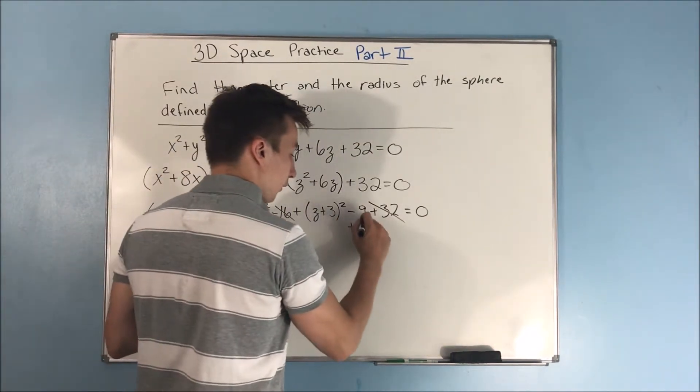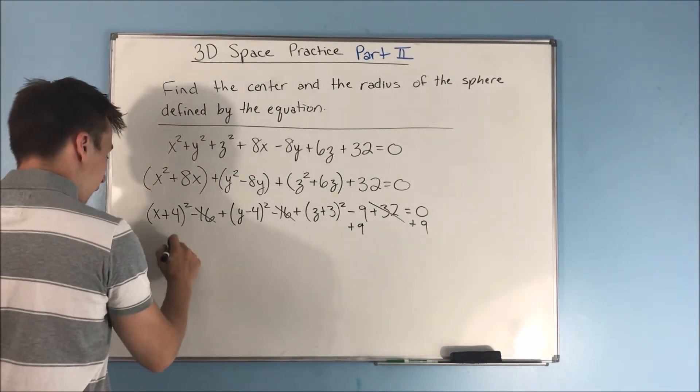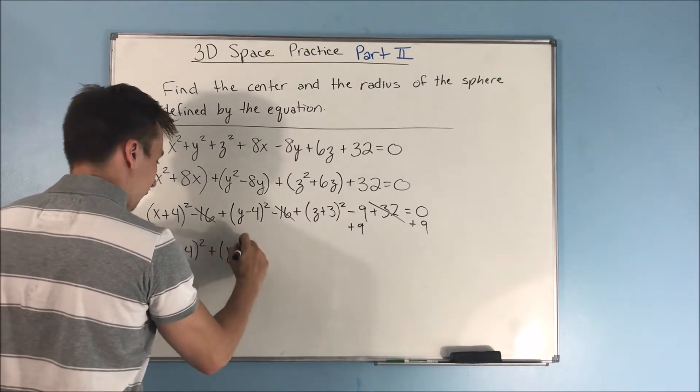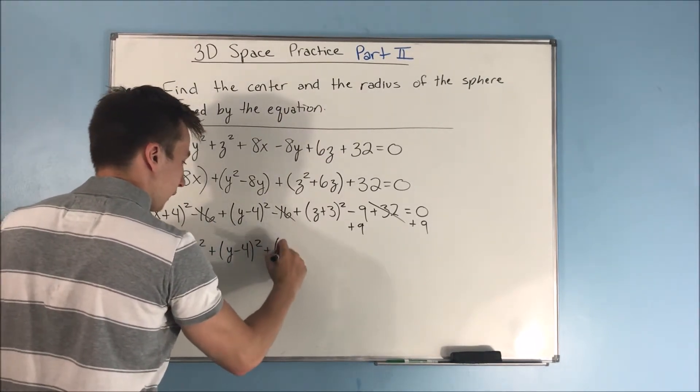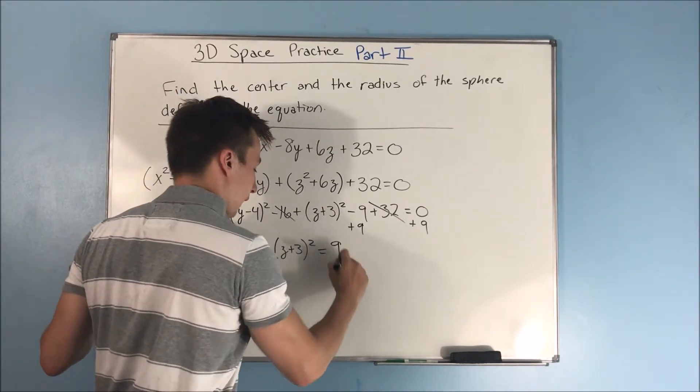Add 9 on both sides. And there we go. We have (x+4)²+(y-4)²+(z+3)²=9.